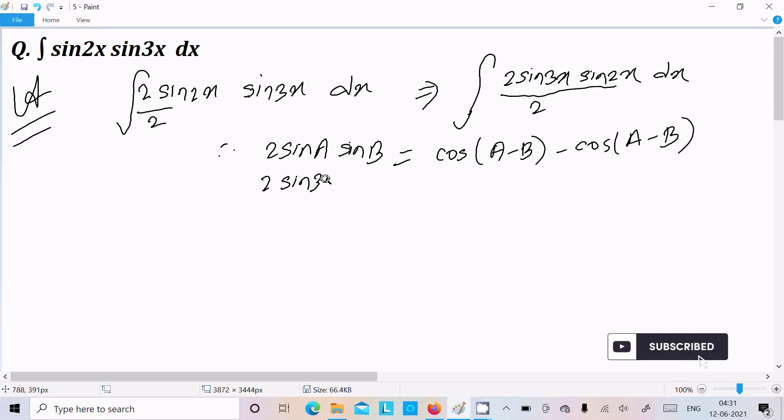So suppose here this one 2 sin 3x into sin 2x, so we can put cos here, 3x minus 2x, minus cos 3x plus 2x.